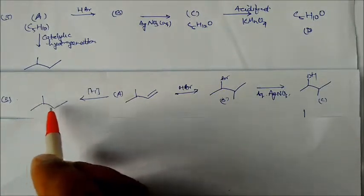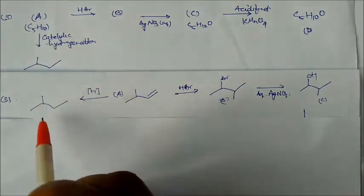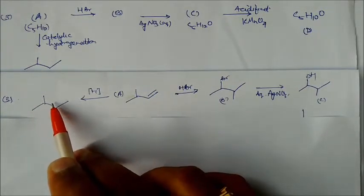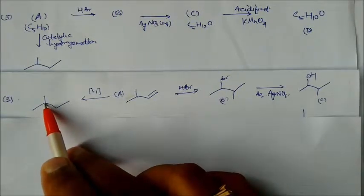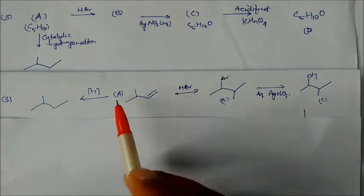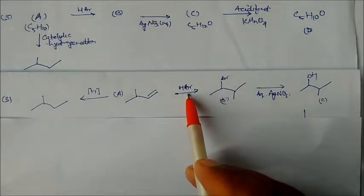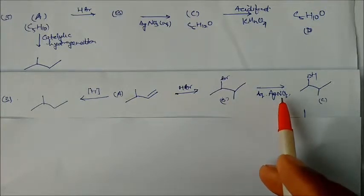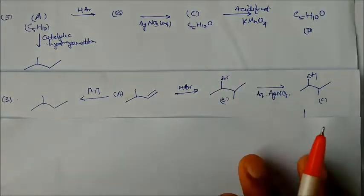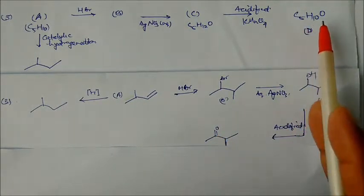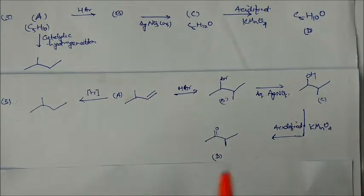The compound is 2-methylbutane on hydrogenation, so A must have the double bond on a specific carbon. If we take this product and add HBr, Markovnikov addition takes place — H here, Br on the other side. Adding aqueous silver nitrate, Br is replaced by OH. Then acidified KMnO4 converts the OH to a ketone, giving C5H10O. That's why all answers are clear.